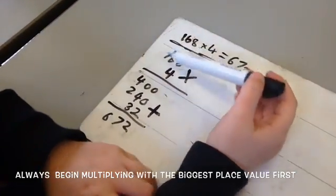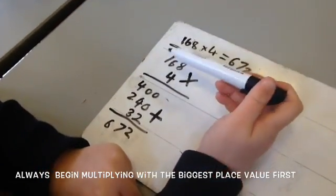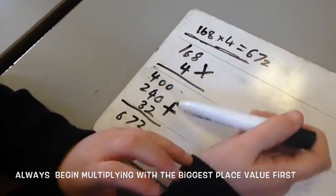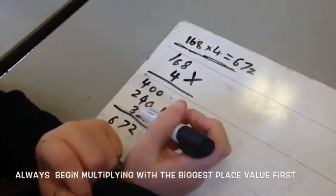Check that 100 times 4 is 400, 60 times 4 is 240, and 8 times 4 is 32.